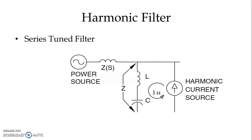This way we can eliminate or filter any frequency of harmonic current. If we require other harmonic frequencies to be filtered out, we can connect different series tuned filters in parallel with each other, and then we can eliminate harmonic currents of other frequencies as well.